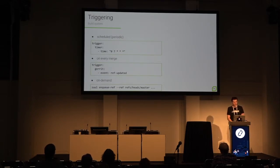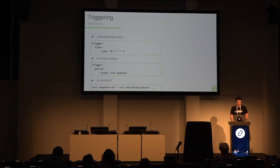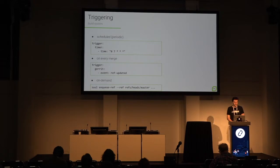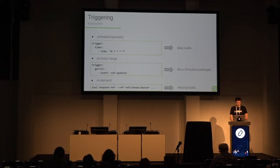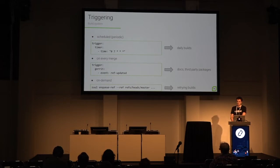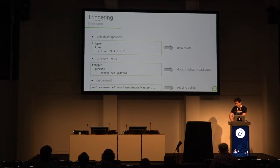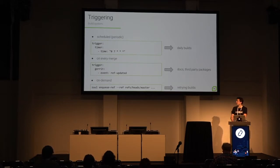Now it's important to say how we trigger events. One way is a scheduled trigger in Zuul, which we use for daily nightly builds. When a release is approaching we change it to build twice a day. On every merge we trigger build pipelines for documentation and for third-party RPM packages for our dependencies — we have a cached repo of dependencies built from RPM specs. It is also possible to trigger the build on demand when something fails, and a Zuul administrator can trigger builds using the CLI.